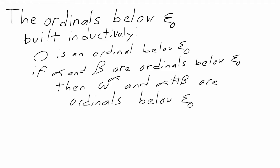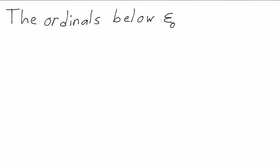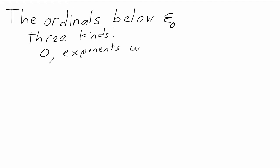Next, we need a way to order these ordinals — we need to say when one is bigger than another. To do that, we need to think a little about the structure of our ordinals. Notice that there are exactly three kinds of ordinals: there's zero, which is a kind by itself; there's ordinals like omega to the alpha, which are exponents; and there's sums, ordinals like alpha plus beta.